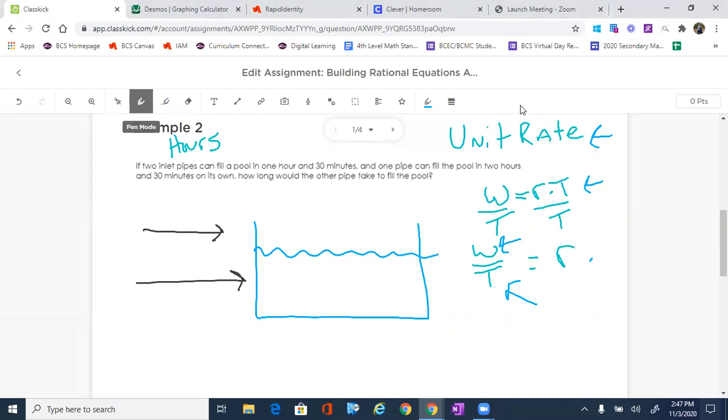So if two inlet pipes can fill a pool in one hour and 30 minutes, and one pipe can fill the pool in two hours and 30 minutes on its own, how long would the other pipe take to fill the pool?